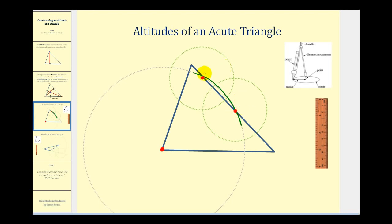Now we're going to take the compass and put the point on one of the points of intersection, then open it so that it's more than half the distance from this intersection point to the other. Once we do that, we'll swing an arc above and below this side of the triangle. We want to make sure the arcs extend past what would be the midpoint of the segment between the two points of intersection. Without adjusting the compass, we'll put the point on the other point of intersection and swing another arc above and below this side of the triangle.